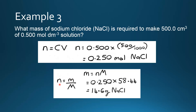The question asks for the mass of sodium chloride, so we rearrange number of moles equals mass divided by molar mass to get mass equals number of moles times molar mass. The number of moles is 0.250 and the molar mass of sodium chloride is 58.44, giving a mass of 14.6 grams of sodium chloride.